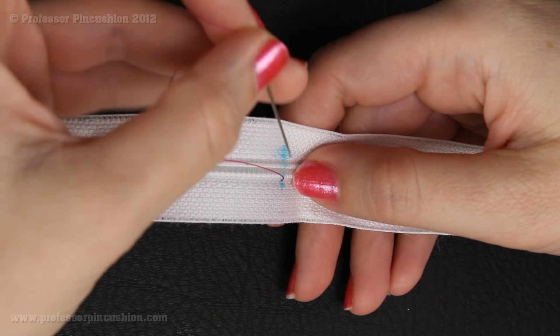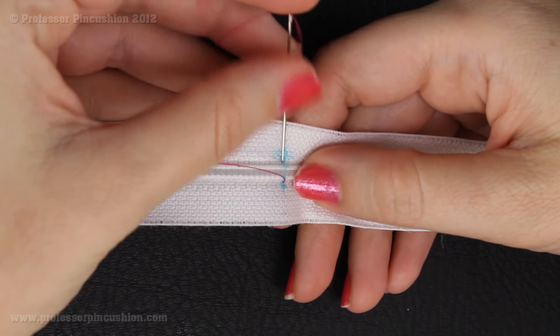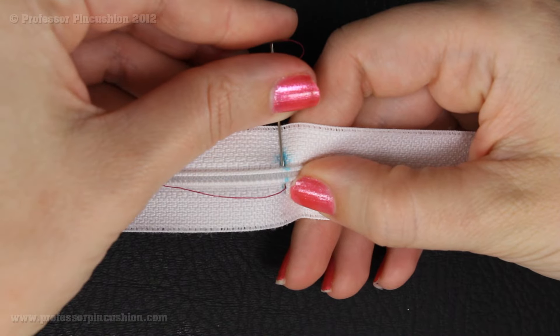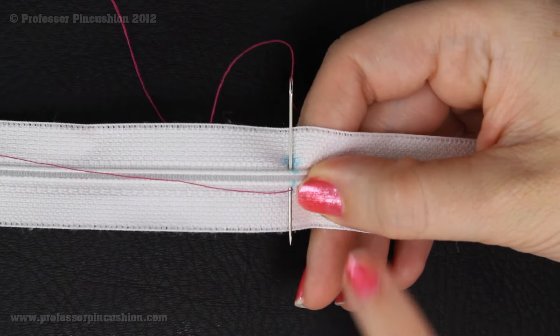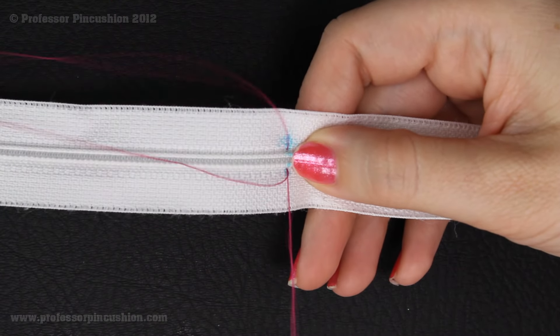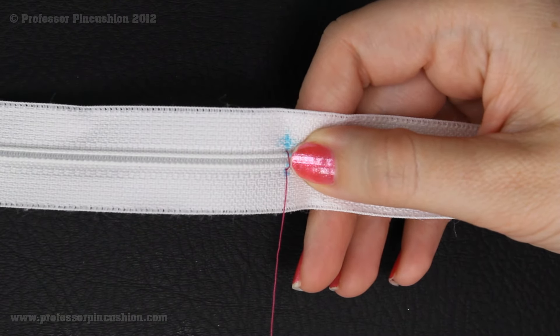So once I've come up, I'm then going to go directly onto the other side of the teeth, put my needle through, and then come right up where I came up originally. Pull it through, and that's one whip stitch.